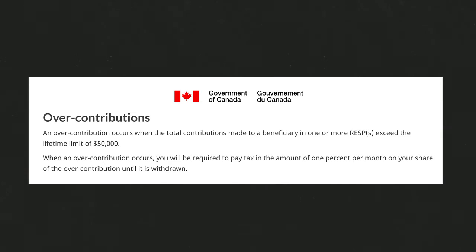The EAP money can only be withdrawn by the young person — not the parent or guardian — because proof of enrollment is required. You should use this money first because it has to be used towards education, and it will be included in the young person's taxable income for that year, which should be low or potentially nothing. To summarize: the money you put in can be withdrawn at any time tax-free, whereas the government money and income earned can only be taken out once the young person is in school, taxed under their bracket — so use that portion first and your contributed portion last.